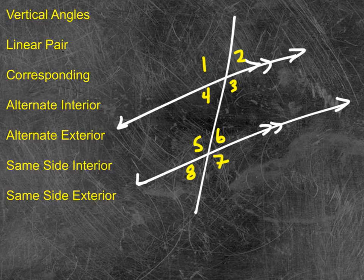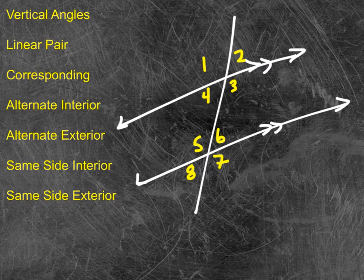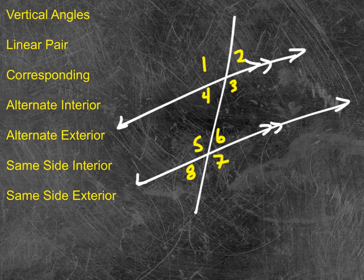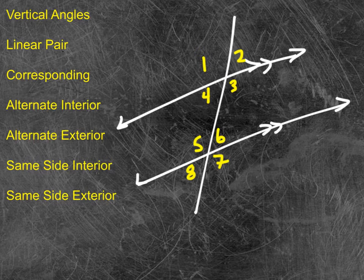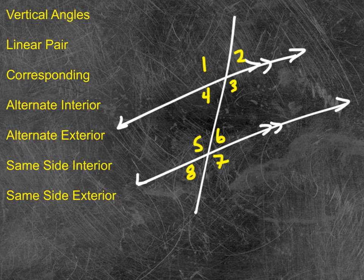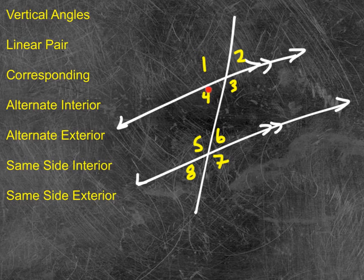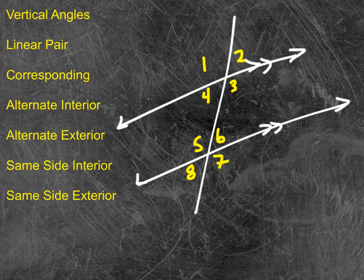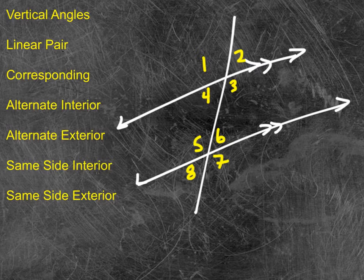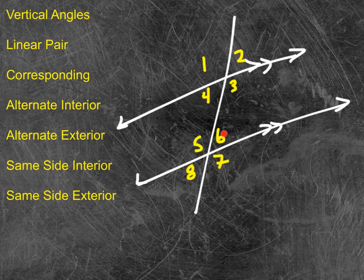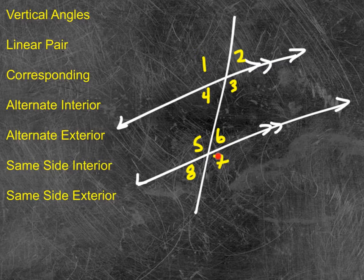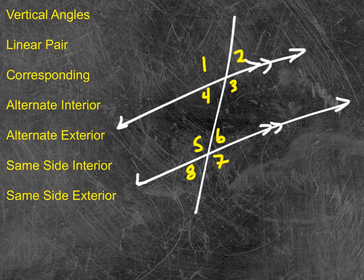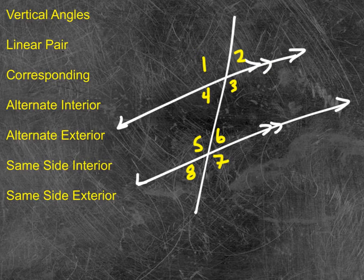All right, I want to quickly review some relationships here. First one I want to review is the vertical angles. There are a number of vertical angles in this diagram, but 4 and 2 would be vertical, 1 and 3 would be vertical, 8 and 6, 5 and 7, those are vertical angles, vertically opposite each other, and they're equal.